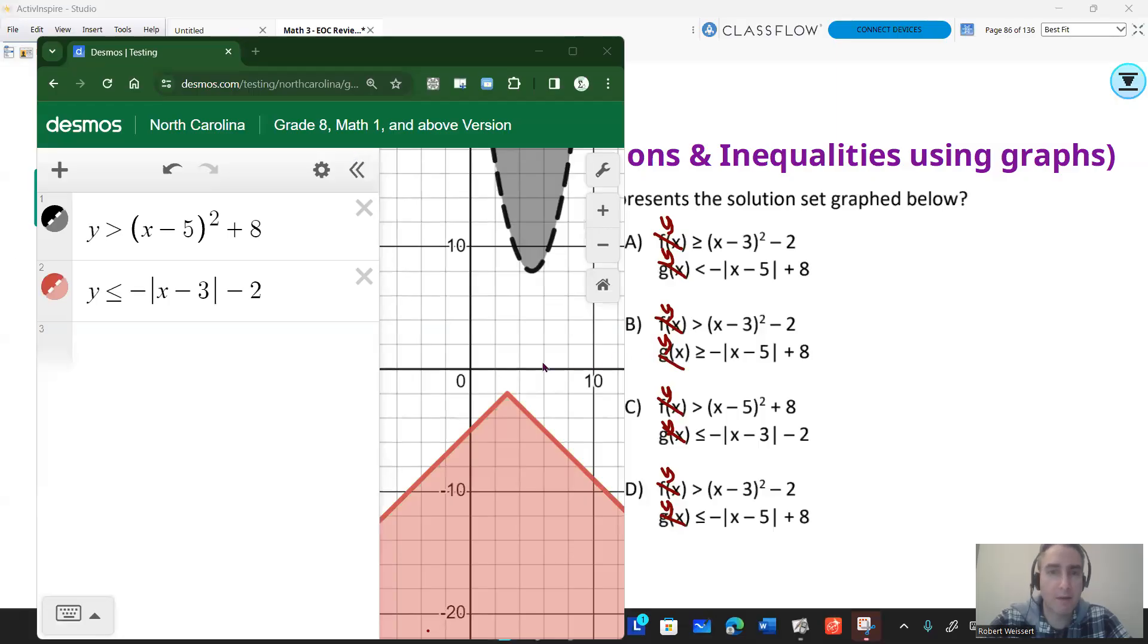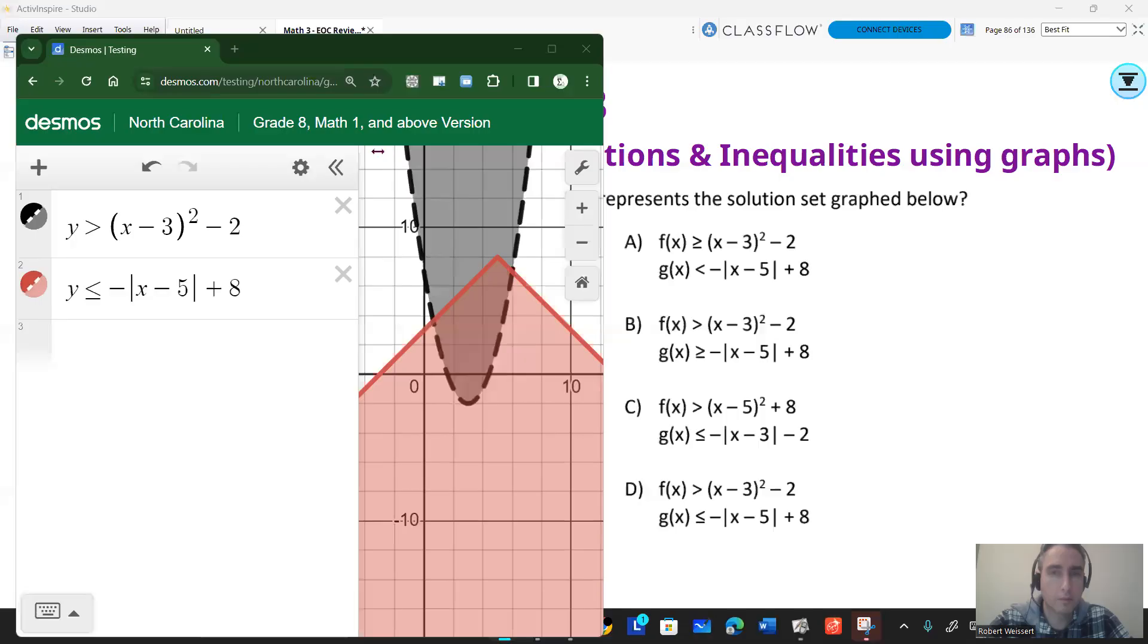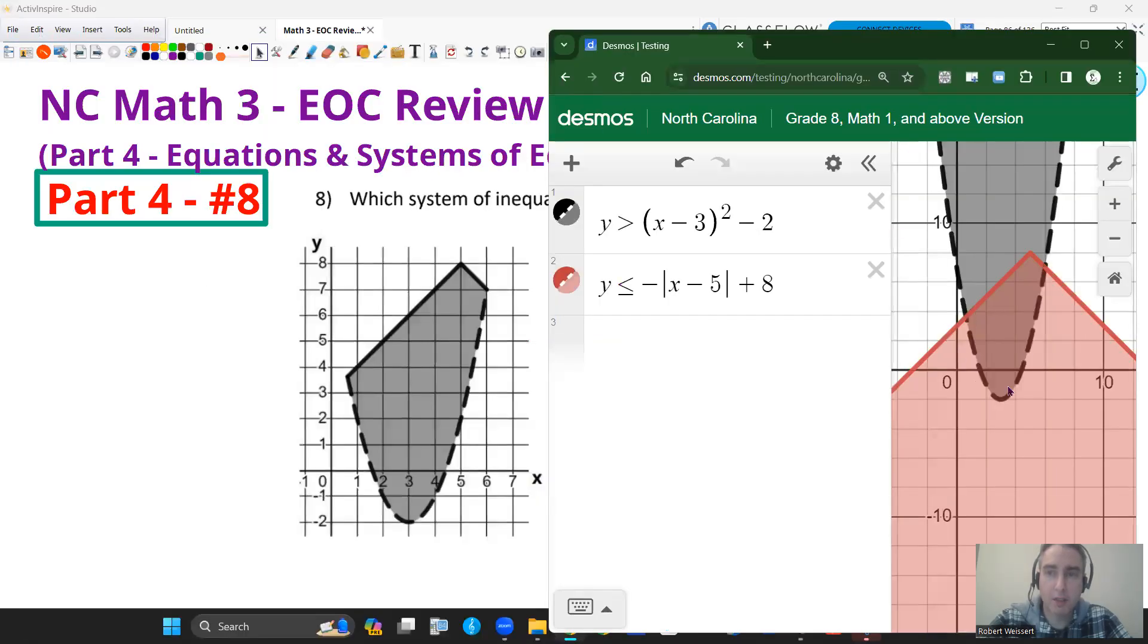For choice C, it's pretty obvious they don't even meet each other, so that's not going to give us a correct graph. So it's going to have to be D. Here's answer choice D, graphed. Let's pull that over here and see if we can match up that graph. Notice the dashing right here and the solid line up here seems to be consistent. Again, my overlapped region is all in here, which is what this shaded region represents. So answer choice D is correct.